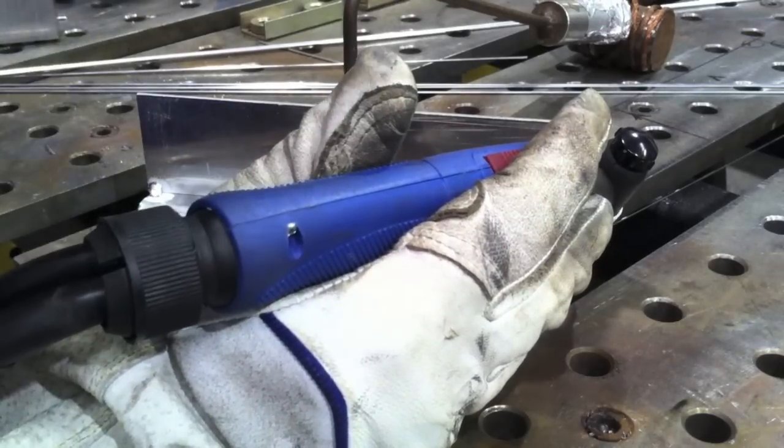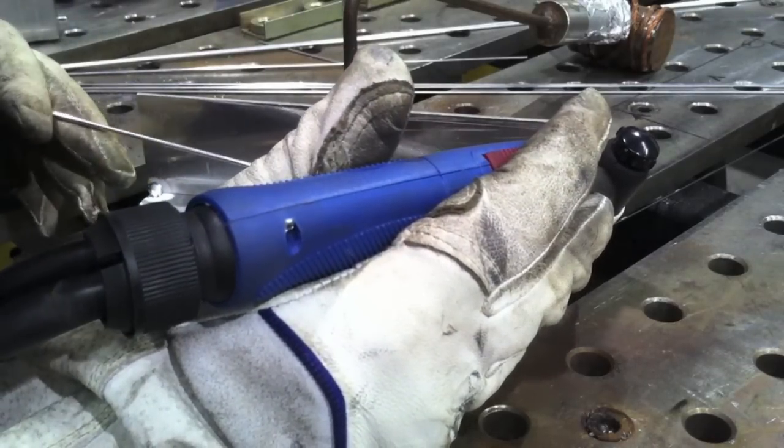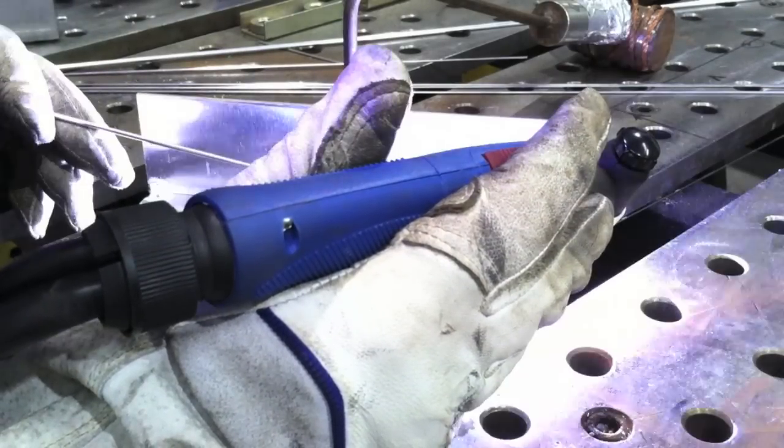And next we'll do the T joint. After both sides of the lap are done, or you can alternate laps and T's. Doesn't really matter. Got two of each.